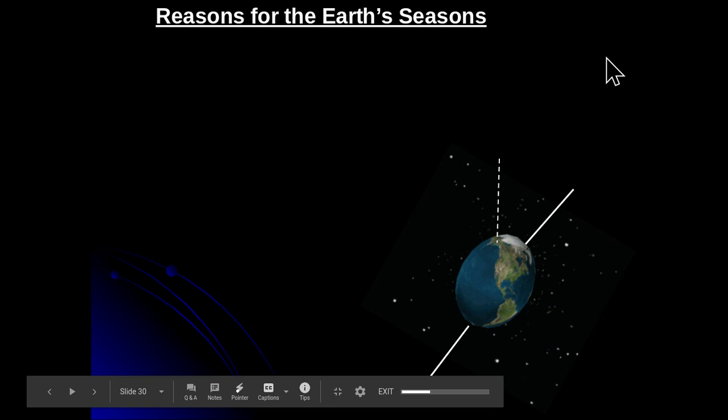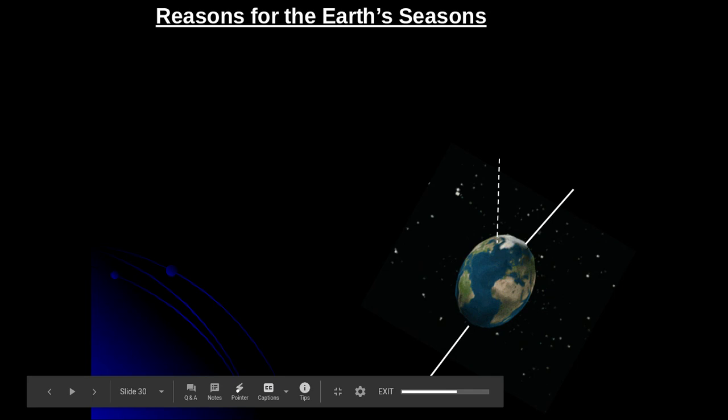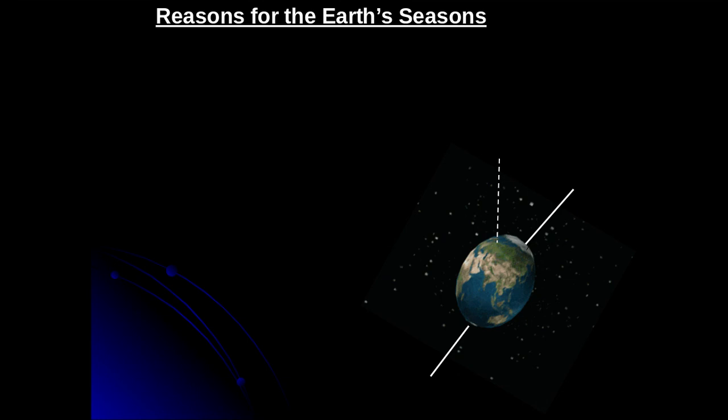Welcome back to part two of the solar system lecture for Earth science class. In the first section, first part of the solar system, we talked a little bit about Earth's place in the solar system and beyond the solar system.